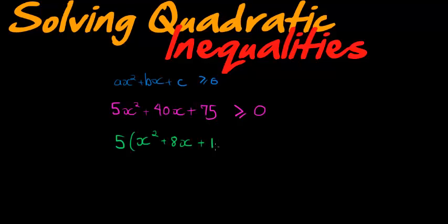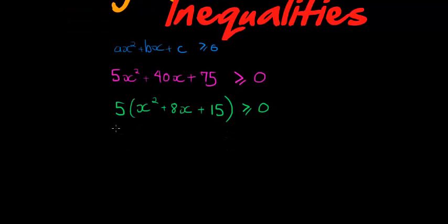75 divided by 5 is 15. This is greater or equal to zero. So now what I like to do is just cancel the 5 on both sides by dividing it away. So x² + 8x + 15 is greater or equal to zero.